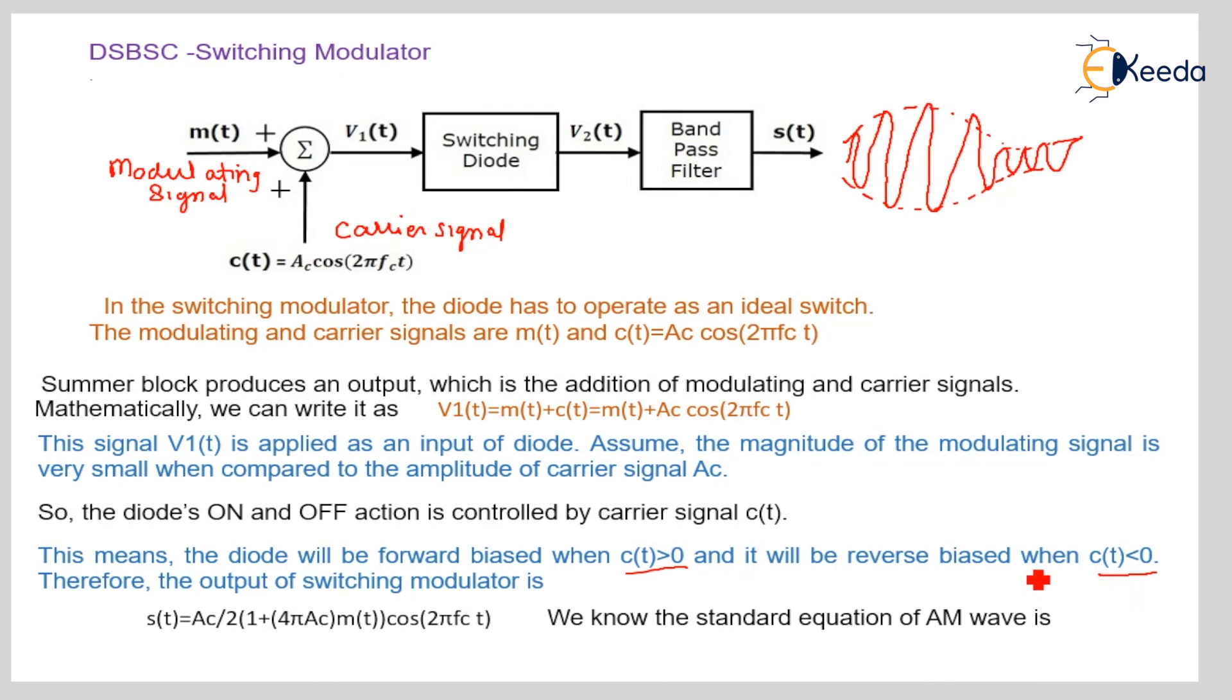So S of T will be AC by 2, 1 plus KA M of T cos of 2 pi fc t. We know the standard equation of AM wave is S of T equal to AC in bracket 1 plus KA M of T cos of 2 pi fc t, where KA is the amplitude sensitivity.